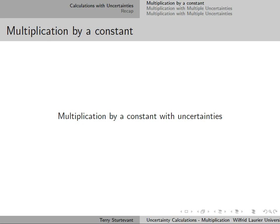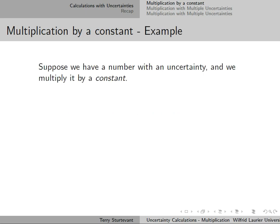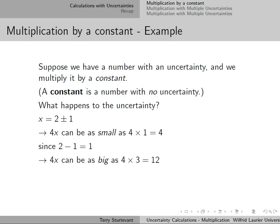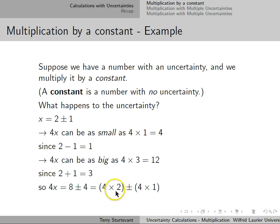The first kind of multiplication is multiplication by a constant — a number that has no uncertainty. So if we multiply x, which is 2 plus or minus 1, by 4, the result can be as small as 4 or as big as 12. That means 4x is 8 plus or minus 4, which is 4 times 2 plus or minus 4 times 1. The uncertainty gets multiplied by the constant.